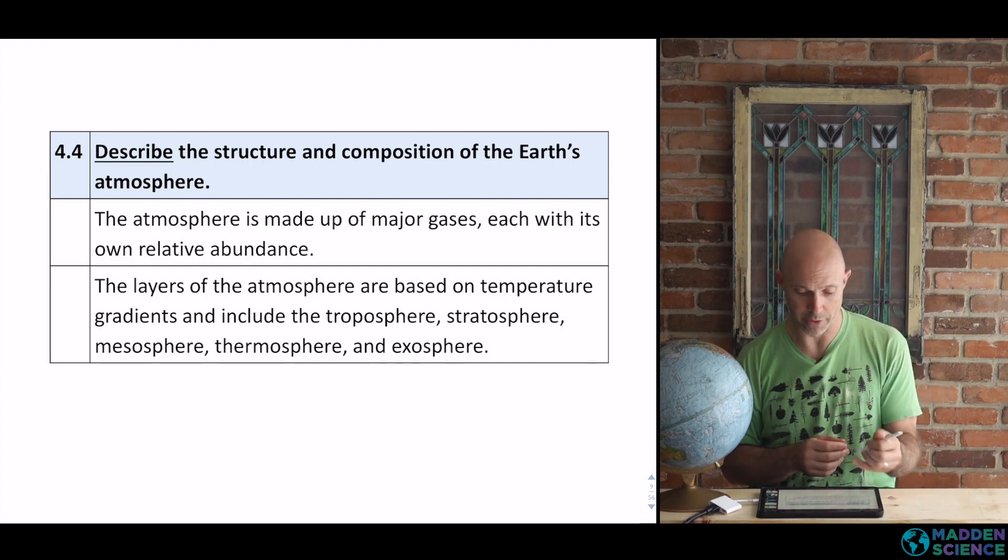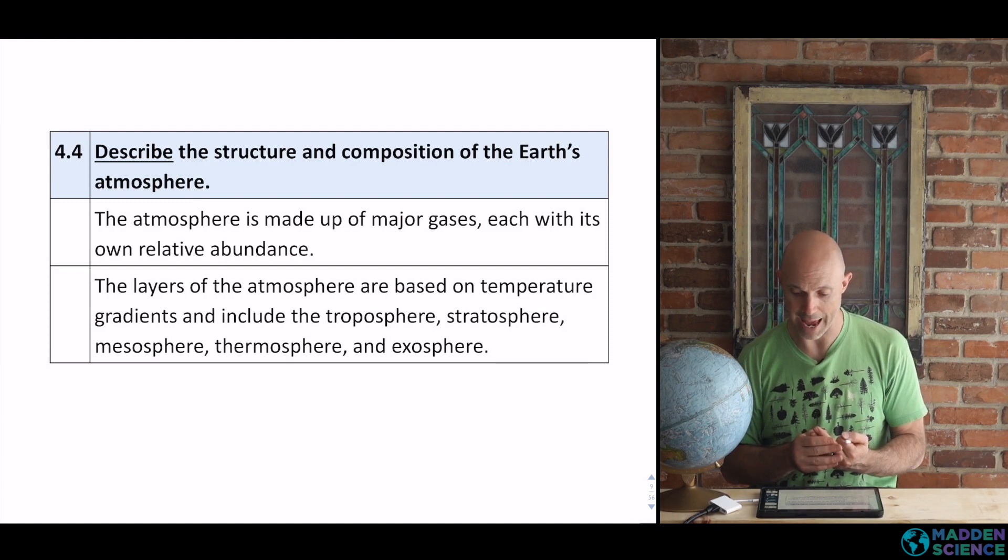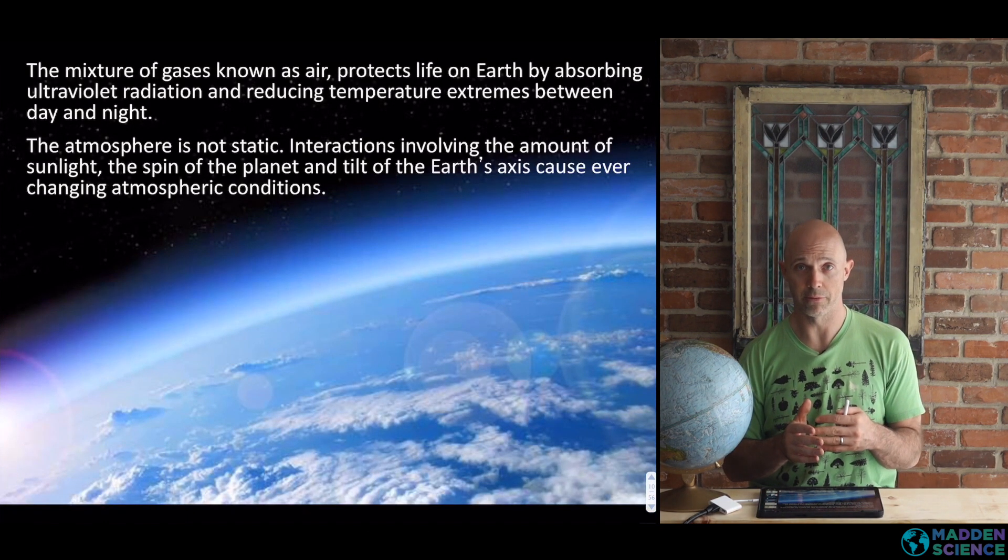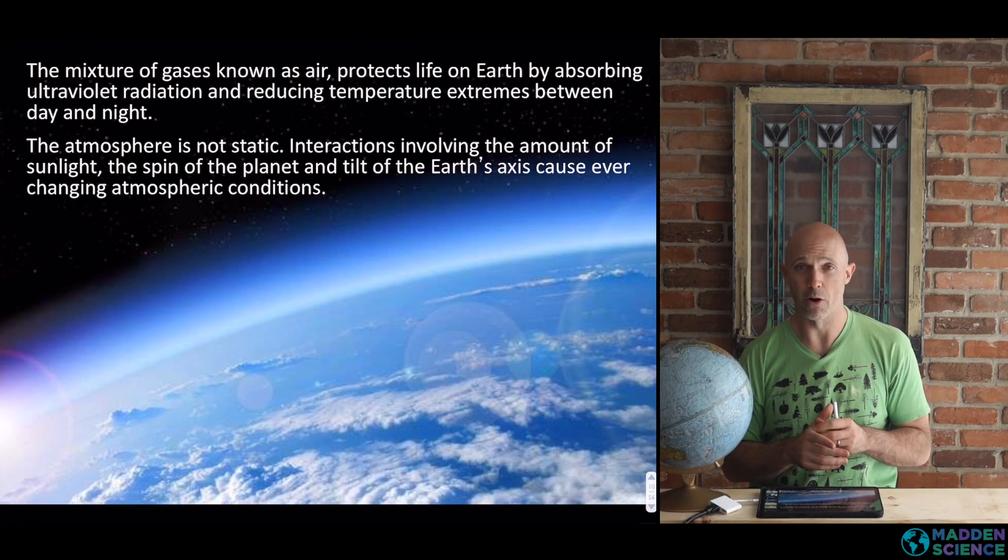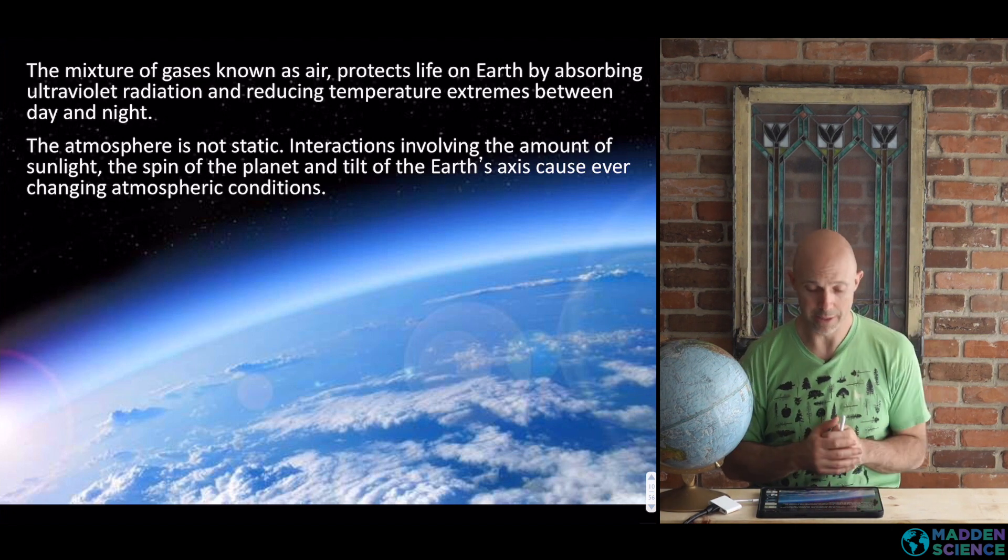So layers of the atmosphere, what's up with that, and major gases. So the atmosphere, it's a mixture of gases, known as air, protects life on Earth by absorbing ultraviolet radiation and reducing temperature extremes between day and night.